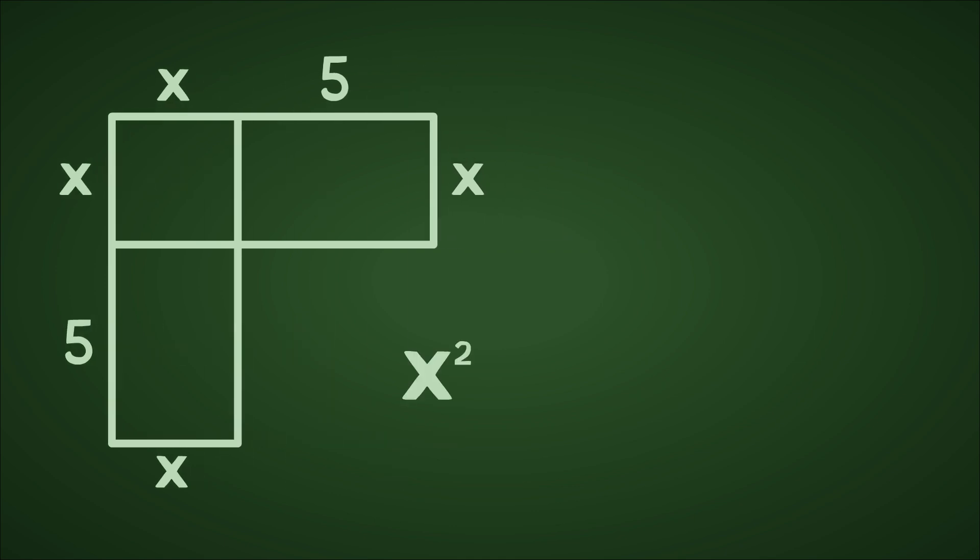So, now we have x squared plus 5x plus 5x, or put another way, x squared plus 10x, which is starting to look a lot like our original equation.